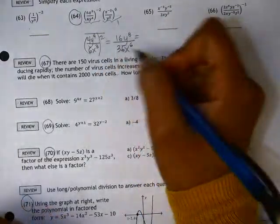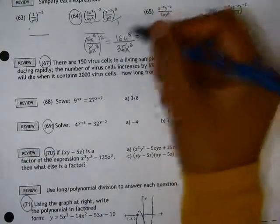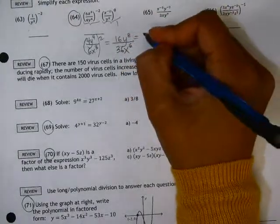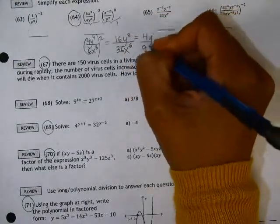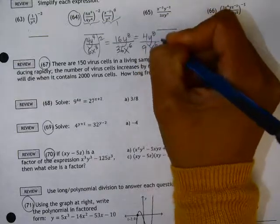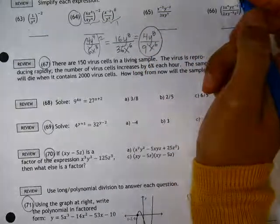Only other thing we can do here is reduce the 16 and the 36. Divide by 4, so 4 over 9. y to the 8th on top, x to the 6th on the bottom. I'll see you next time.